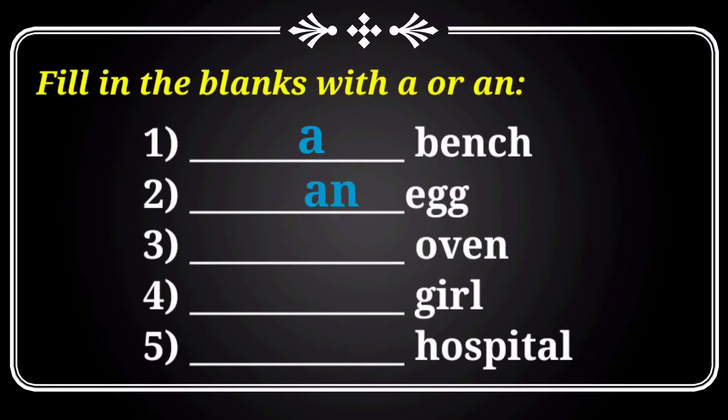Look at the third one: blank — oven. Now you might say 'an oven', but that is not correct. I told you before — you have to see the vowel sound or consonant sound. Here, the word 'o' makes a sound like 'w' — as in 'word'. So the word makes a 'w' sound, which comes under a consonant sound. So you should not use 'an' before this. You have to use 'a oven'.